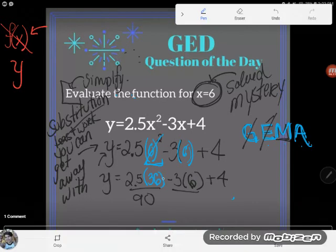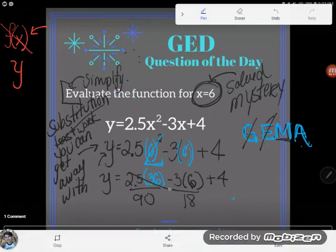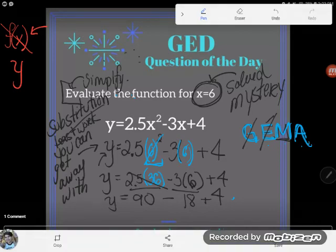So I got 90 from there. And when I did 3 times 6, I got 18. Now I'll drop down everything I haven't used. I haven't used the minus. I haven't... the final step of the order of operations is to do all your addition and subtraction.